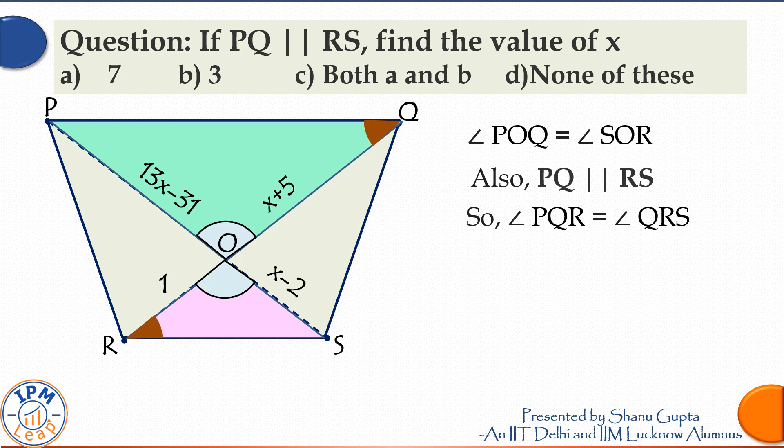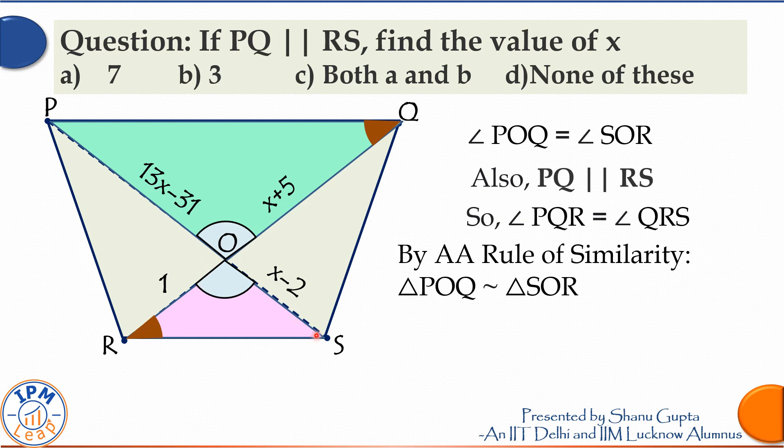Therefore by AA rule of similarity, triangle POQ is similar to triangle SOR. The ratio of the corresponding sides should also be equal and I would like to get an equation which involves the ratio of these four sides.